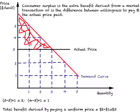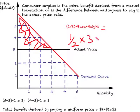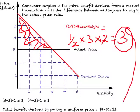Looking at our triangle: the height is two and the base is three. Plugging in the numbers — one-half times base three times height two — we get three dollars, which is the same as what we calculated unit by unit. This is how we calculate consumer surplus.